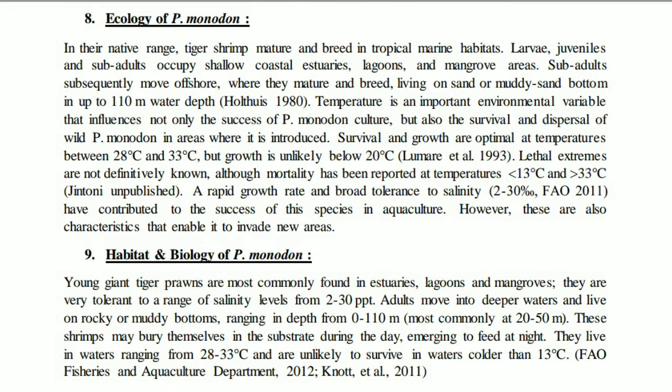Temperature is an important environmental variable that influences not only the success of Penaeus monodon culture, but also the survival and distribution of wild Penaeus monodon in areas where it is introduced. Temperature is a key factor for breeding. Young tiger prawns are most commonly found in estuaries, lagoons, and mangroves. They are very tolerant of a range of salinity levels from 2 to 30 ppt.